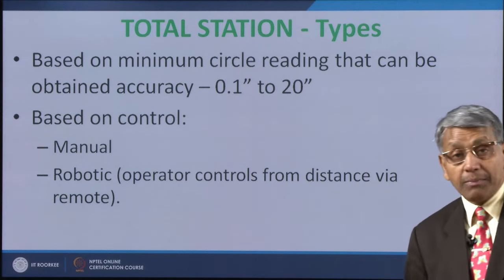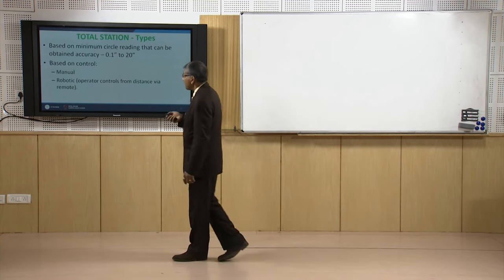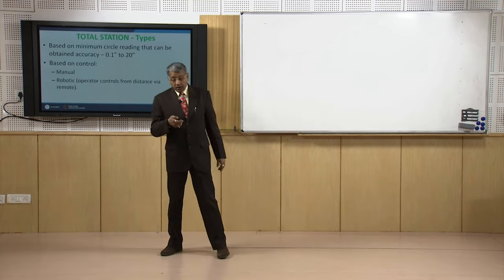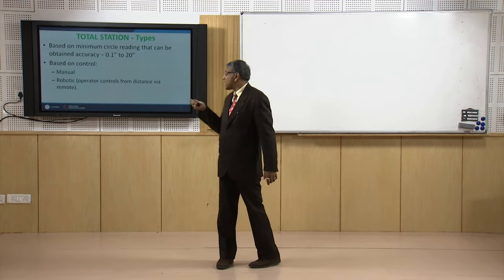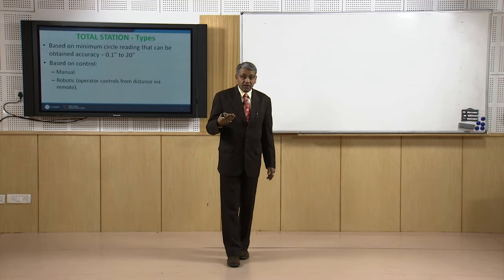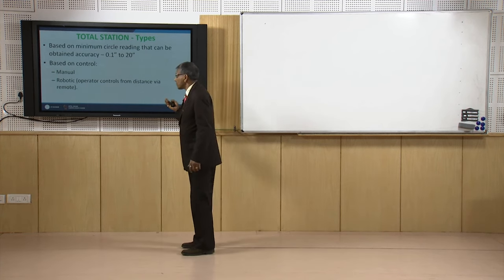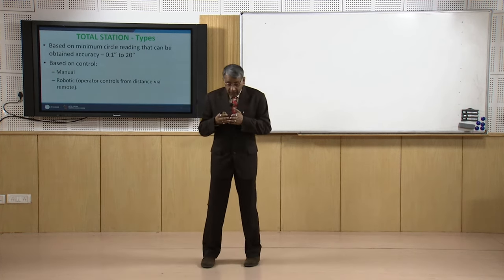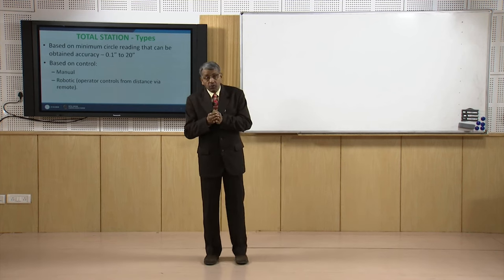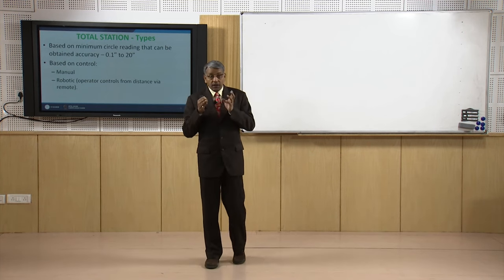Some varieties of total station may have a least count as small as 0.1 second, and some varieties may be as large as 20 seconds. In between there are values like 1-second total station, 2-second total station, 5-second total station, 15-second total station, and 20-second total station. Depending upon the least count of circle reading, the type of total station depends.